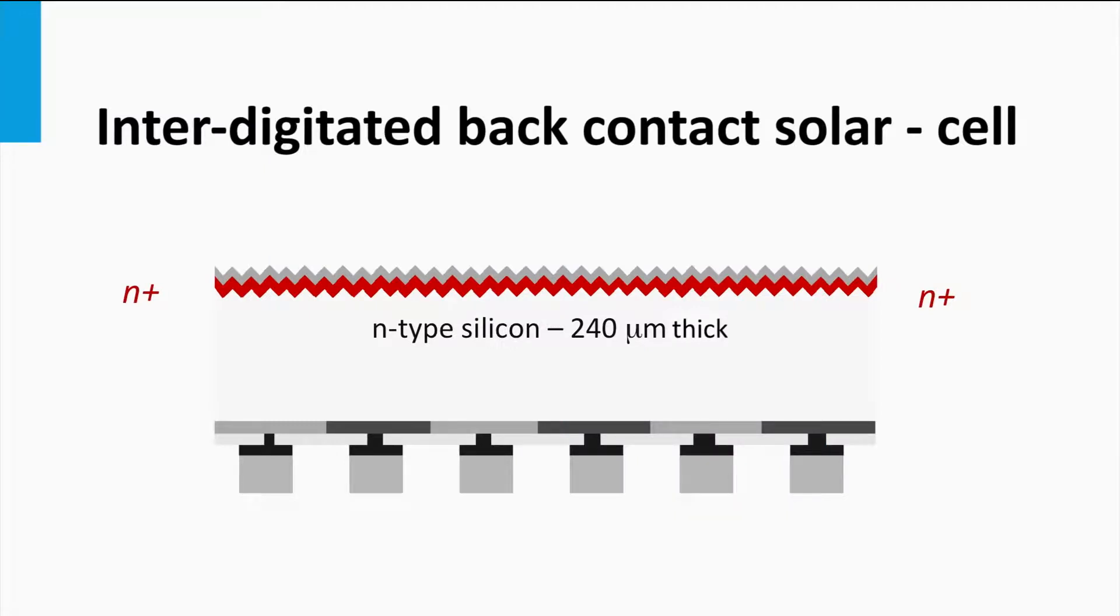At the front side, losses of the light excited charge carriers due to surface recombination is suppressed by using the same tricks like the back surface field as discussed for the rear surface for solar cells based on P-type wafers.